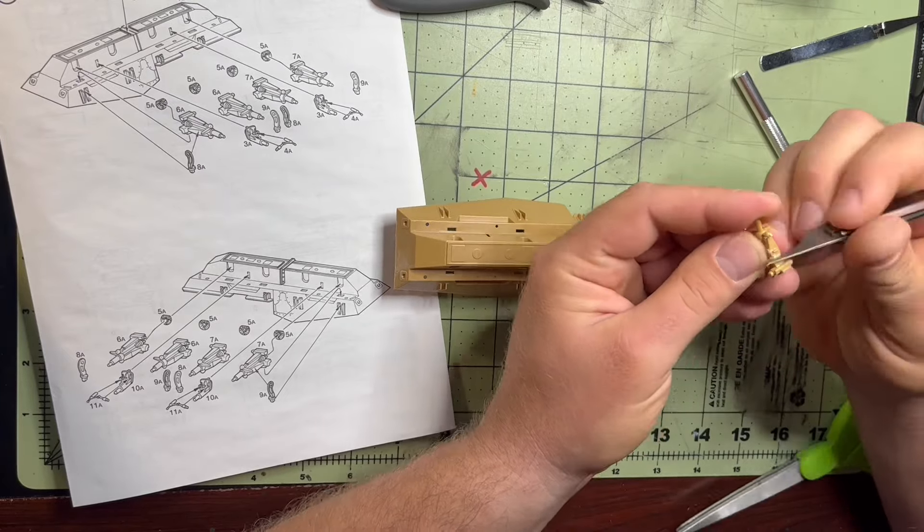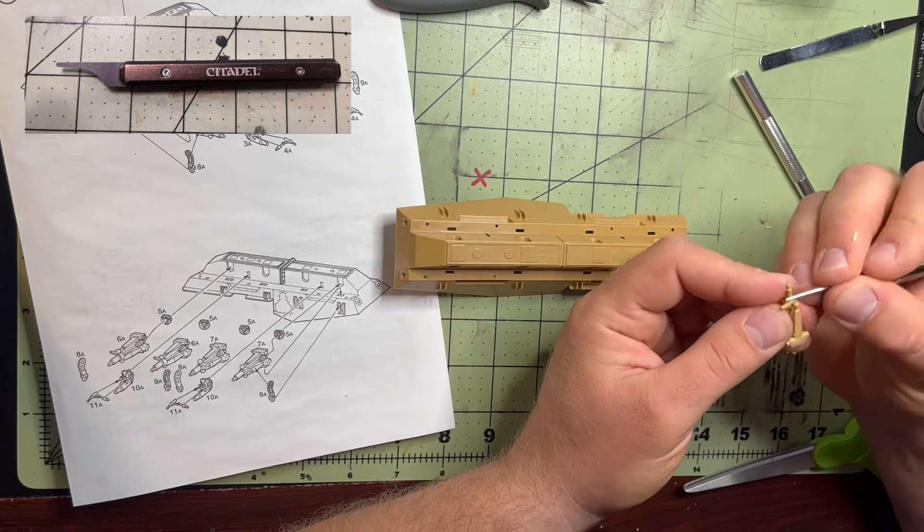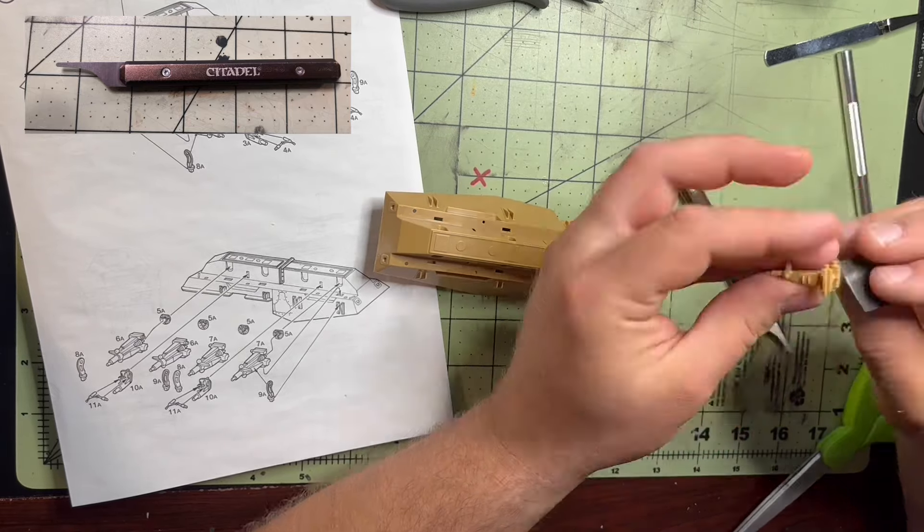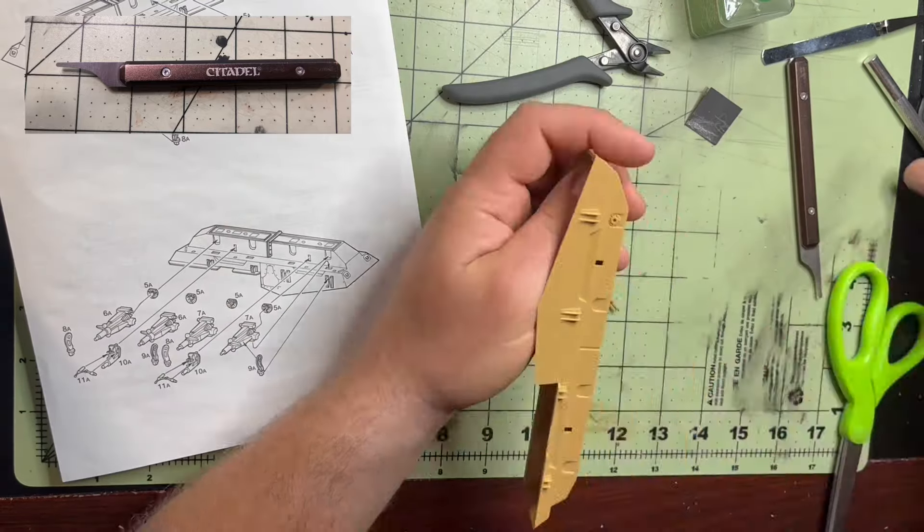If anybody is curious about that tool that I'm using, that is a Citadel. It's a tool that's used for getting rid of seam lines and flashing and stuff like that. And it works pretty good. And I got that off Amazon.